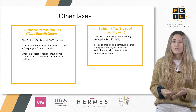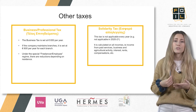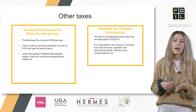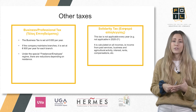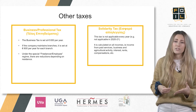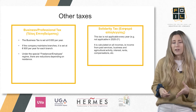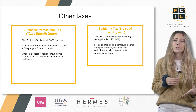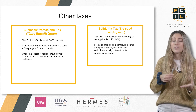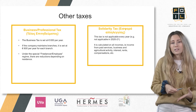All taxes for freelancers and companies include the business tax and the solidarity tax. The business tax is set at €650 per year. If the company maintains branches, it is set at €600 per year for each branch. It has to be noted that under the special freelancer-employee regime, there are reductions depending on residence.